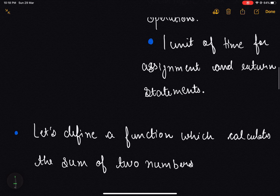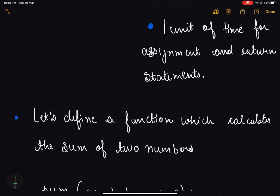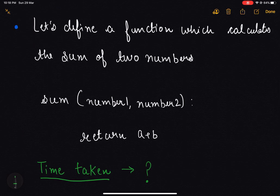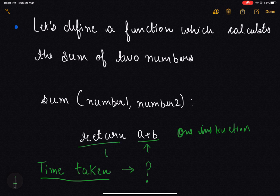Now let's evaluate the running time of our algorithm based on our model machine. Let's start with a very simple example — a function which calculates the sum of two numbers. As we can see, this function has only one instruction, which contains one arithmetic statement as well as one return statement.